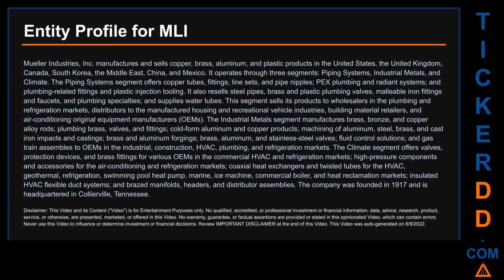Hello, my name is Carl. I searched the public web to find information about the company behind this ticker. Mueller Industries Inc. manufactures and sells copper, brass, aluminum, and plastic products in the United States, the United Kingdom, Canada, South Korea, the Middle East, China, and Mexico. It operates through three segments: Piping Systems, Industrial Metals, and Climate. The Piping Systems segment offers copper tubes, fittings, line sets, pipe nipples, hex plumbing and radiant systems, and plumbing-related fittings, and also resells steel pipes, brass and plastic plumbing valves, and related products. This segment sells to wholesalers in the plumbing and refrigeration markets, distributors to the manufactured housing and recreational vehicle industries, building material retailers, and air conditioning OEMs.